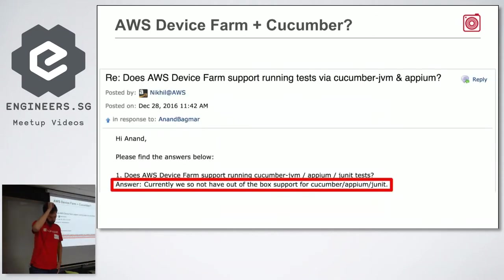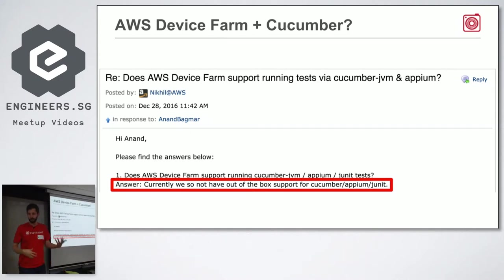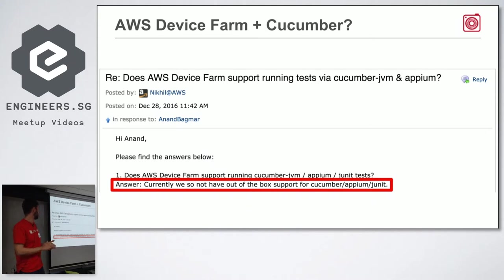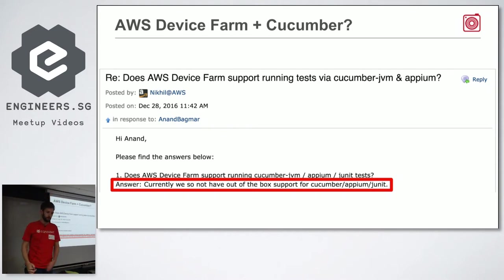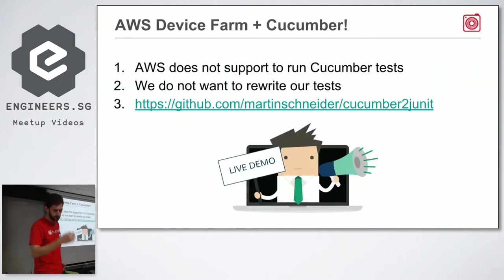The first problem we ran into: how many of you are familiar with Cucumber using feature files? We're quite proud of having our nice set of more than 100 scenarios in feature files. But when you look at AWS, they say they cannot run Cucumber. The way it works, you have to compile your test suite, upload it as a zip file to AWS, and then they run it. A lot of people in the forums were stuck on this - they wanted to use the service but didn't want to migrate away from Cucumber.